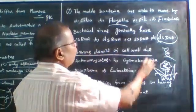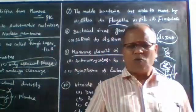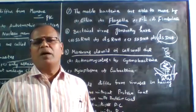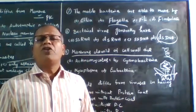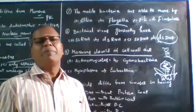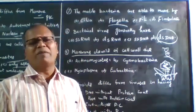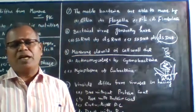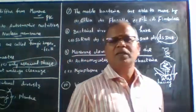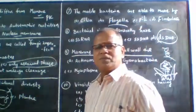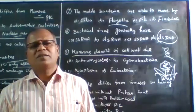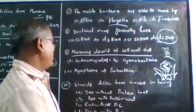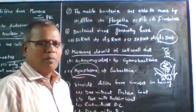Next question: Monerans devoid of cell wall - options are Actinomyces, Cyanobacteria, Mycoplasma, or Eubacteria. The answer is Mycoplasma. Among all Monerans, only Mycoplasma is devoid of a cell wall.